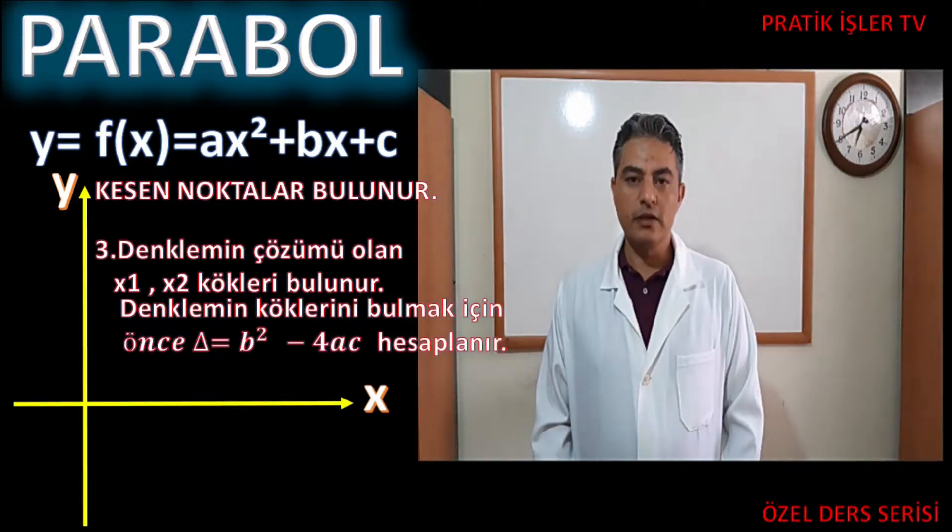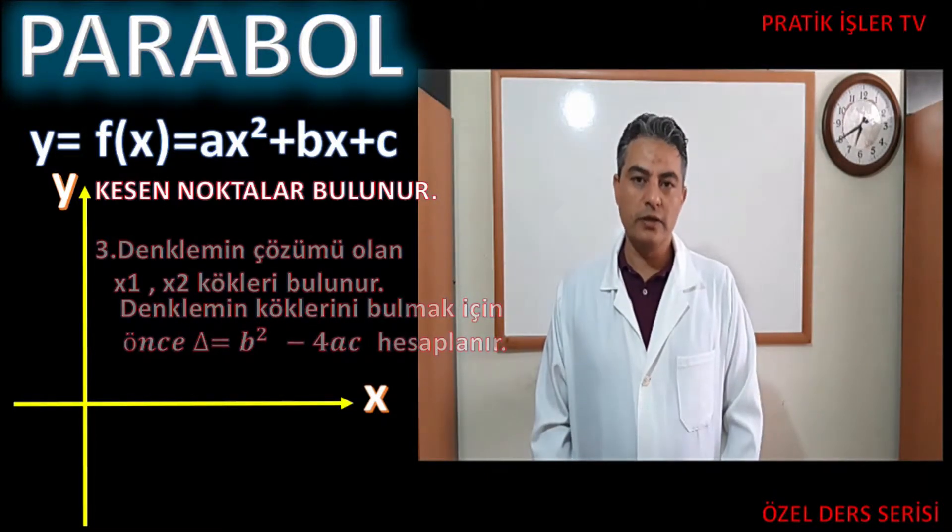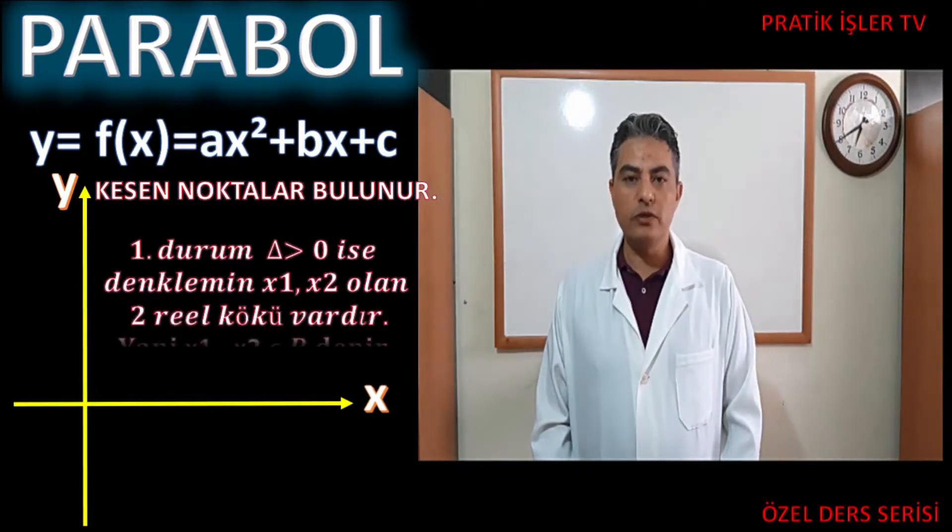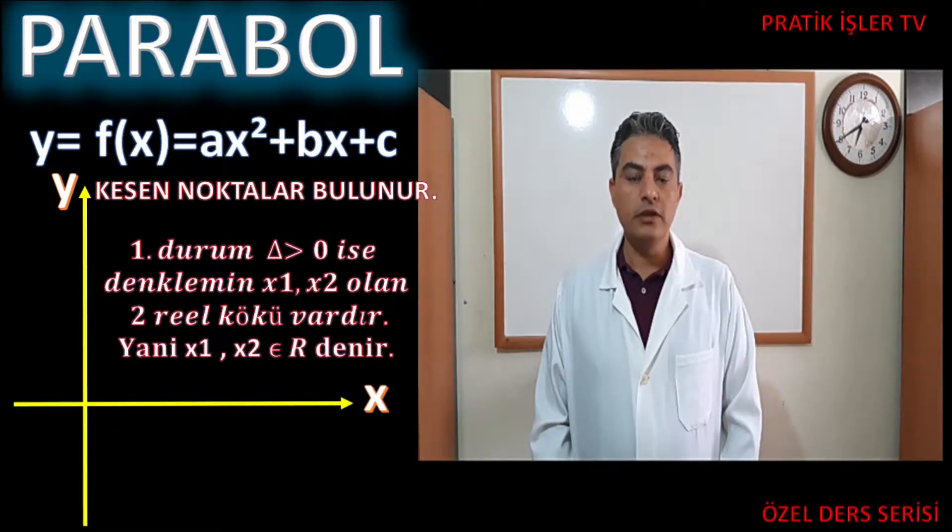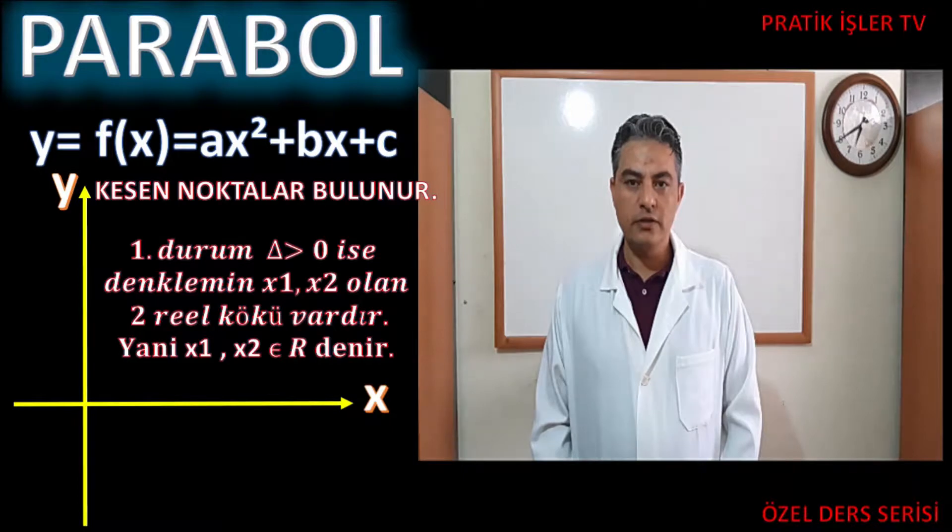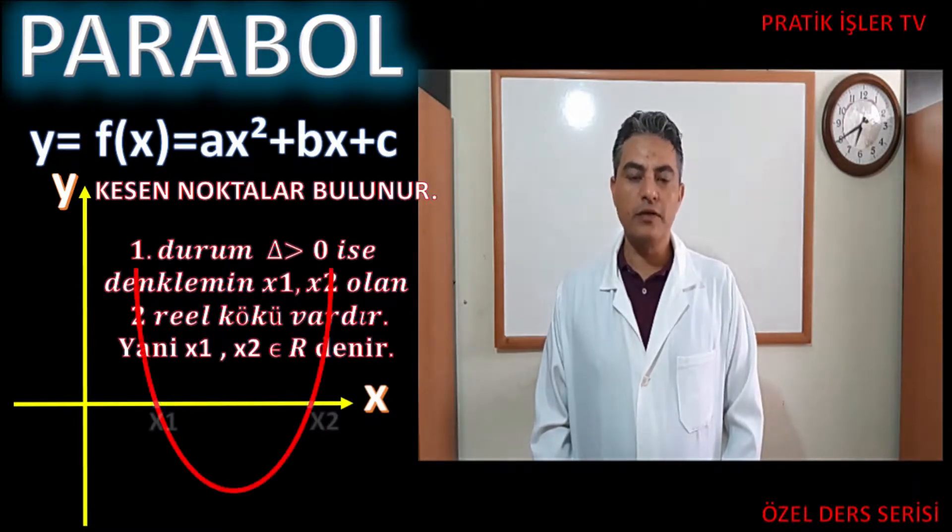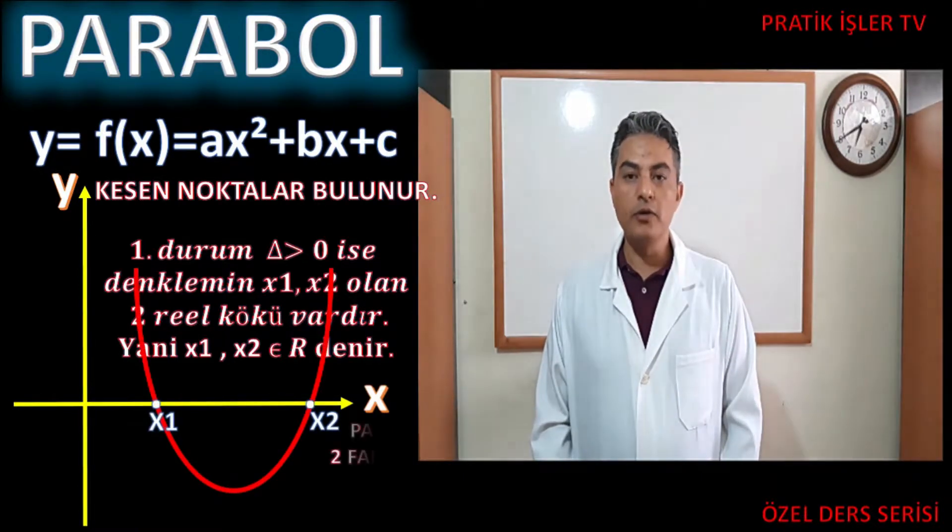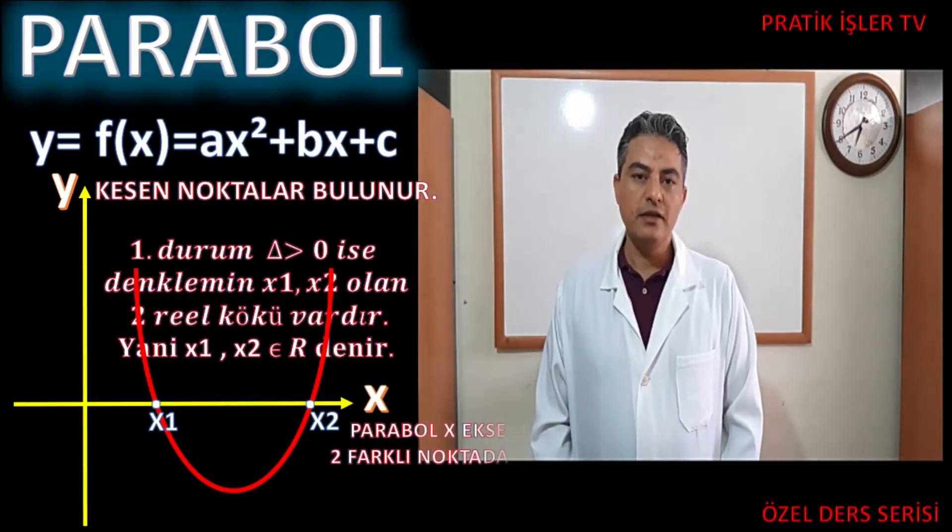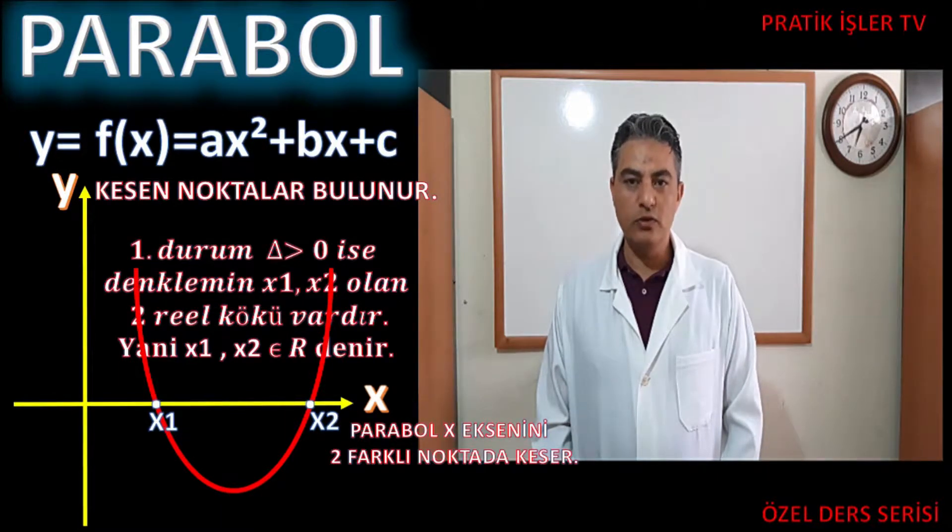Sevgili arkadaşlar, delta'nın 3 durumu var. Birincisi, delta sıfırdan büyükse denklemin iki real kökü var demektir. Bunun parabol grafiğindeki anlamı parabol x eksenini iki farklı noktadan kesiyor demektir.